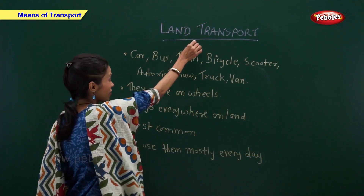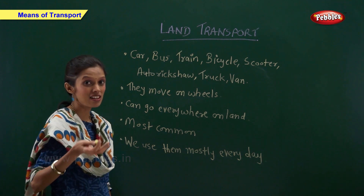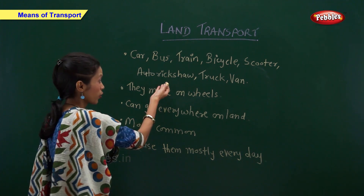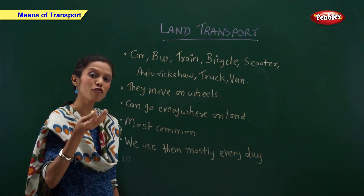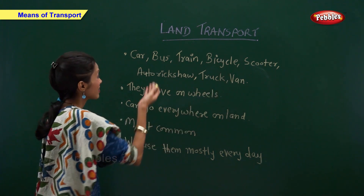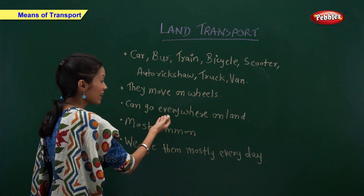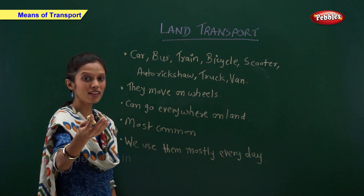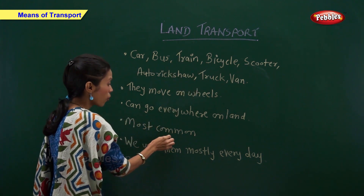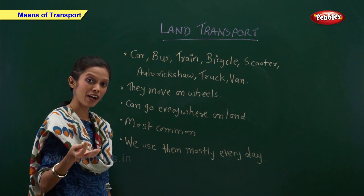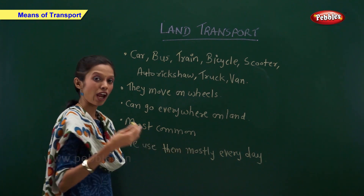Land transport — car, bus, train, bicycle, scooter, auto rickshaw, truck, and van are the examples of land transport. These vehicles move on wheels. They can go everywhere on the land. These vehicles are the most common method of land transport and we use these vehicles every day.